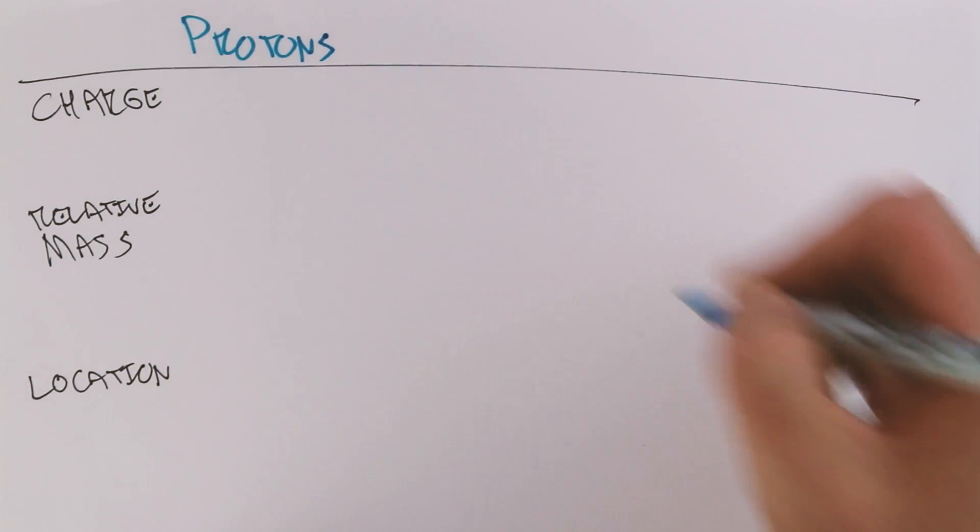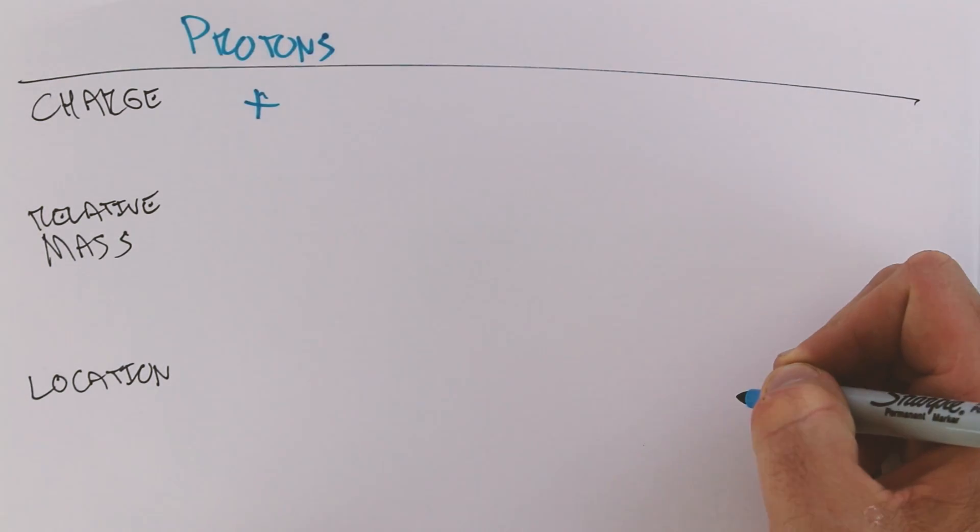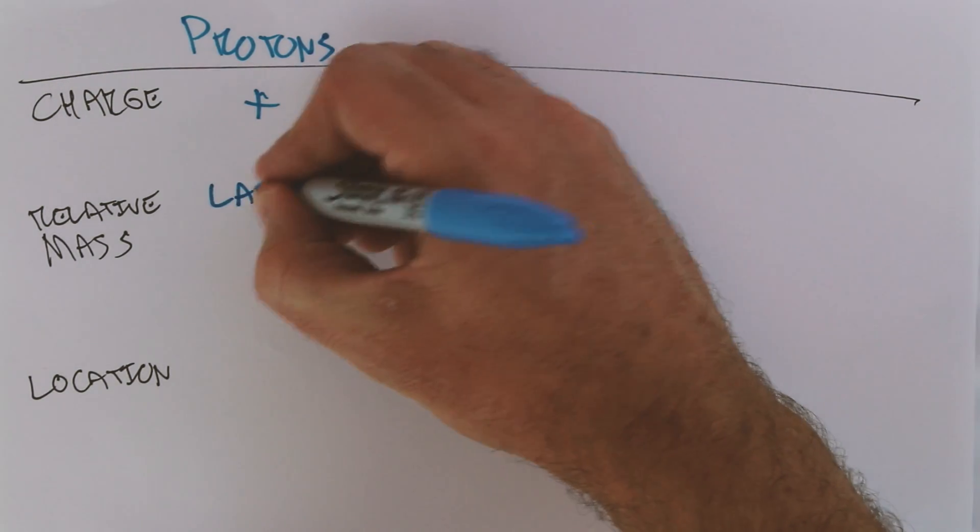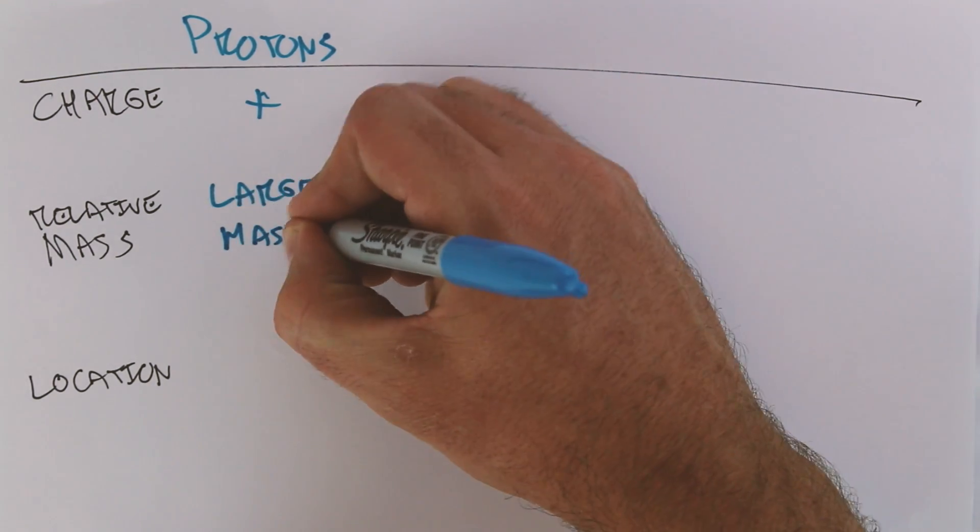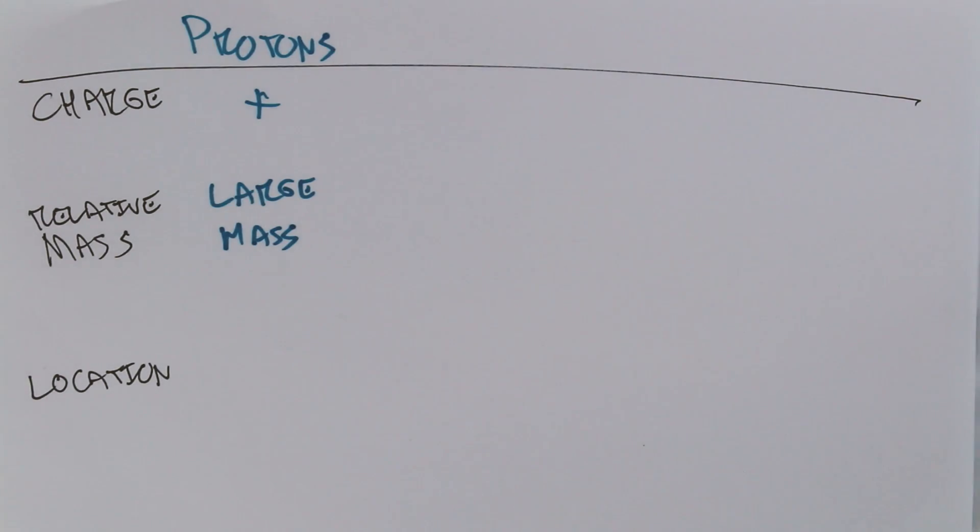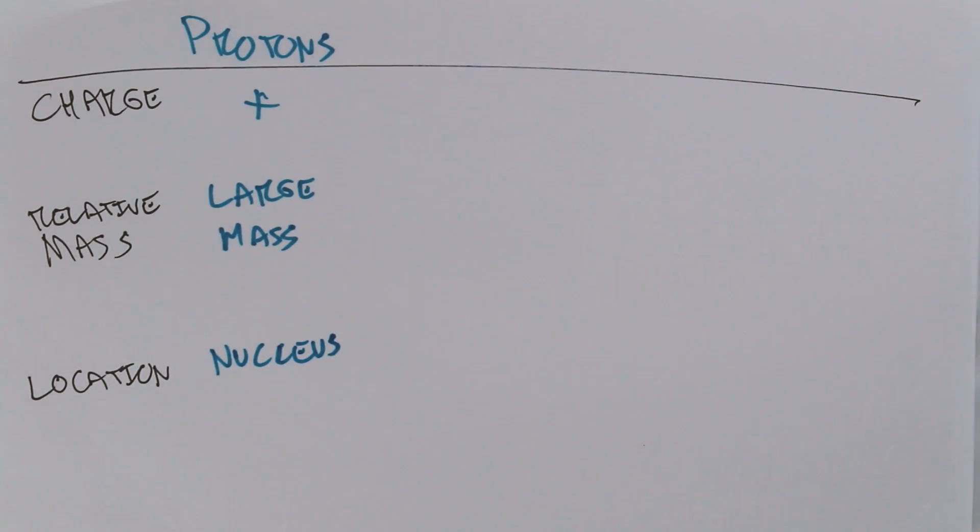Let's start with protons. Protons are positively charged. They have a large relative mass, and the location is the nucleus. They make up the nucleus.